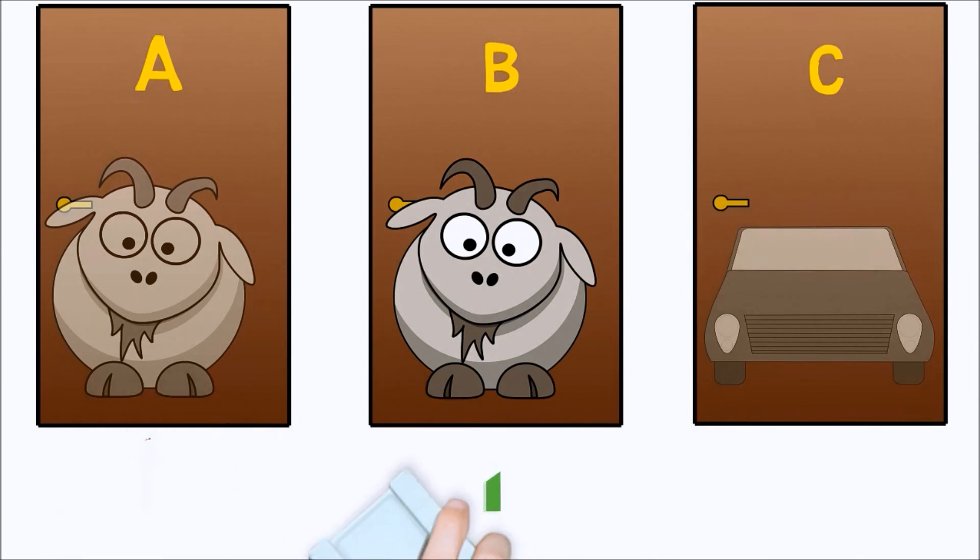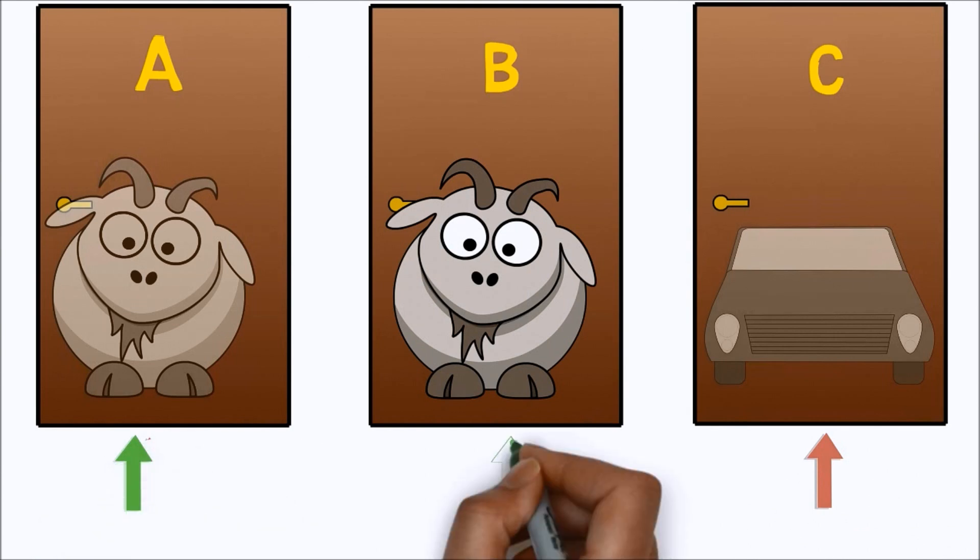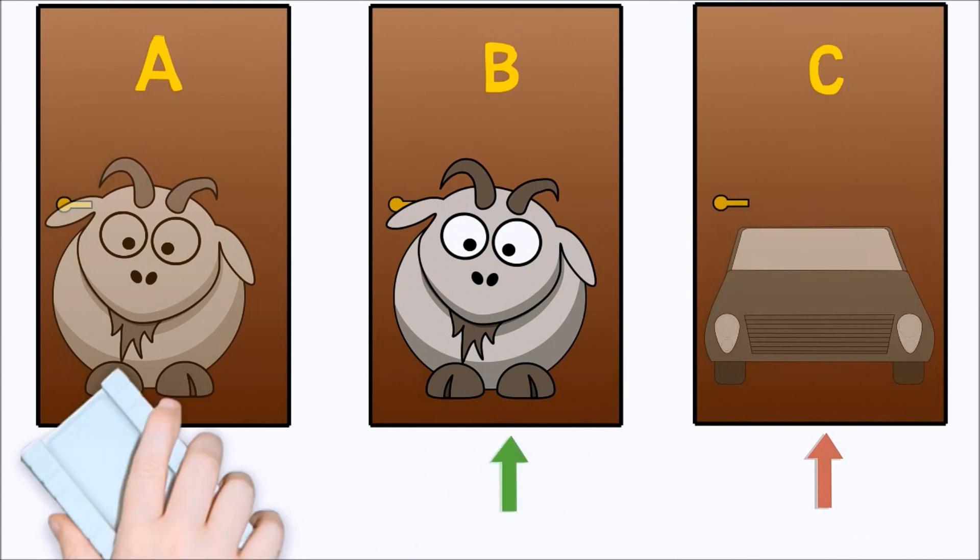If the contestant has already chosen the correct door, Monty is equally likely to open either of the two remaining doors. Now, here is the game. After Monty has shown a goat behind the door that he opens, the contestant is always given the option to switch doors.